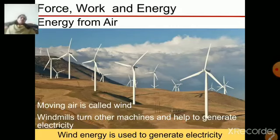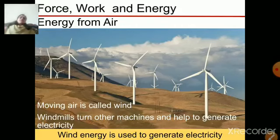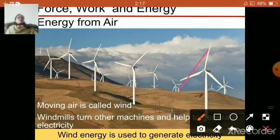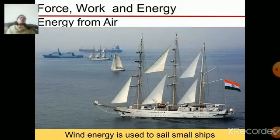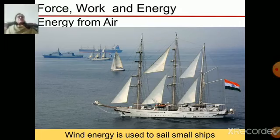The energy from the wind — the moving air is called wind — is used to generate electricity with the help of devices called windmills. Windmills are installed in places where fast wind blows. With the help of that wind, the turbines rotate, and in this process they produce electricity. This electrical energy can be used in various ways. Wind energy is also used to sail small ships, because with the help of wind energy these ships can sail in that direction.